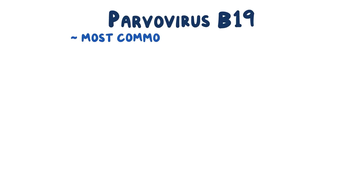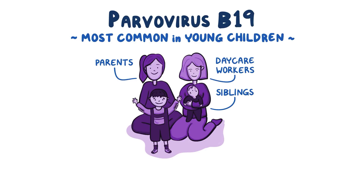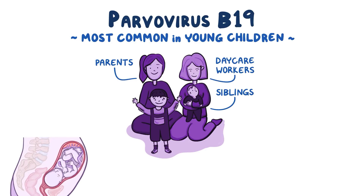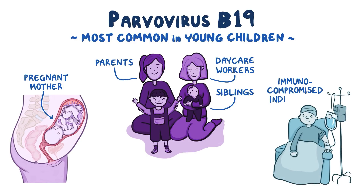Parvovirus B19 is most common in young children and those who live or work with them, like parents, siblings, and daycare workers. Fetuses are at risk of parvovirus B19 if their pregnant mother has never had the virus in the past. Immunocompromised individuals are also particularly at risk of chronic parvovirus B19 infection, since their immune system cannot mount an appropriate response to the virus.